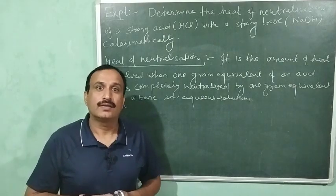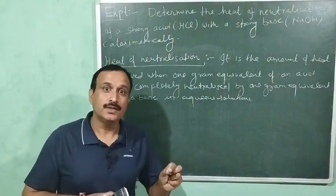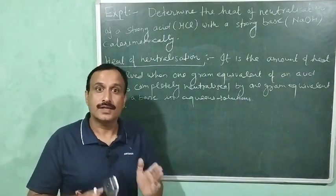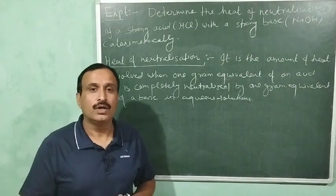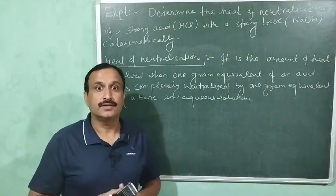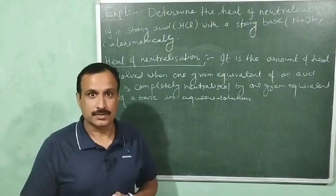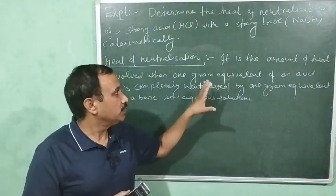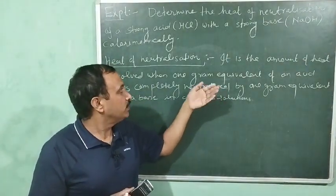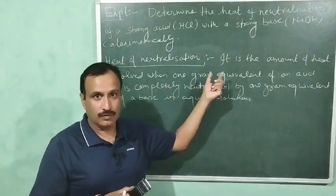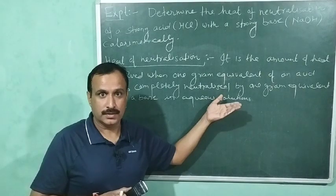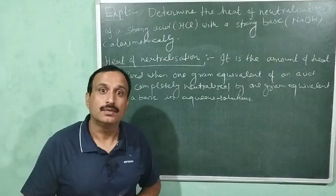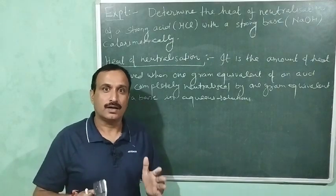I also explained that the heat of neutralization of a weak acid with a strong base, or a weak base with a strong acid, is always less than minus 57.1 kilojoules per mole, because some heat is utilized in the dissociation of the weak acid or the weak base. This heat of neutralization is calculated for one gram equivalent of an acid and one gram equivalent of a base, but the units are kilojoules per mole.